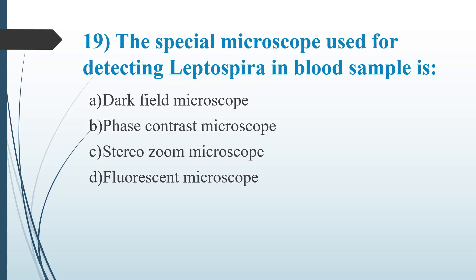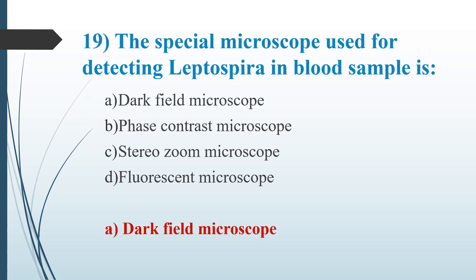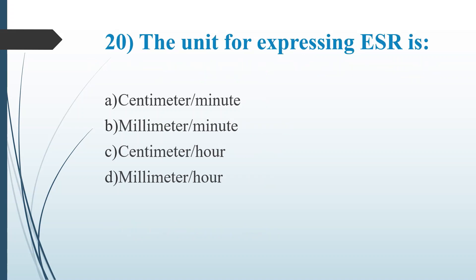Nineteenth question: The special microscope used for detecting Leptospira in blood samples is. Option A, dark field microscope. Option B, phase contrast microscope. Option C, stereoscopic microscope. Option D, fluorescent microscope. Answer is Option A, dark field microscope.